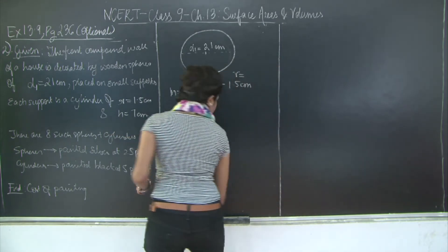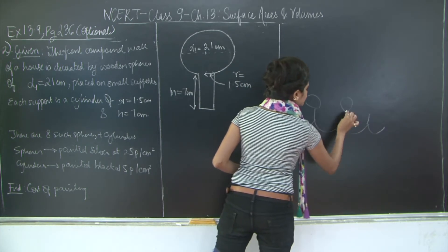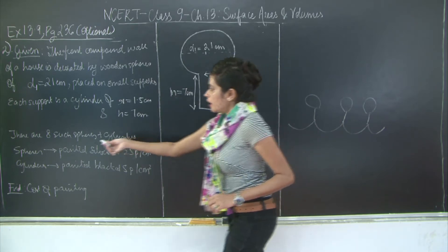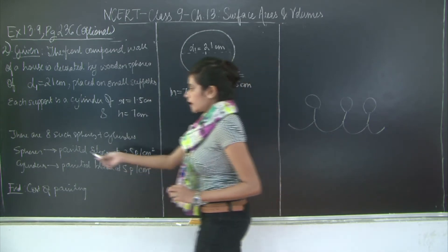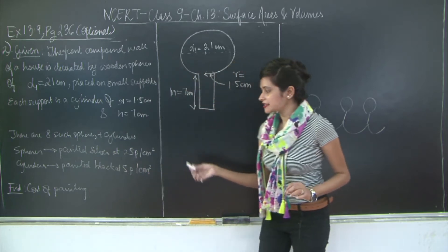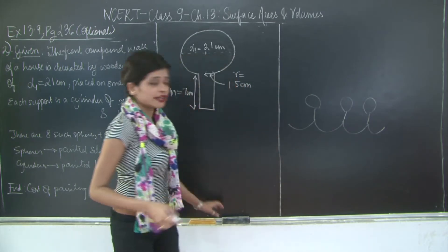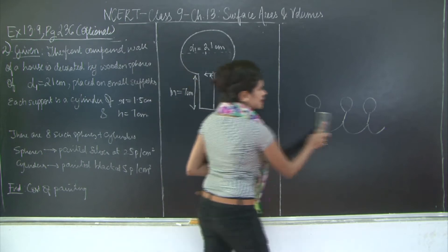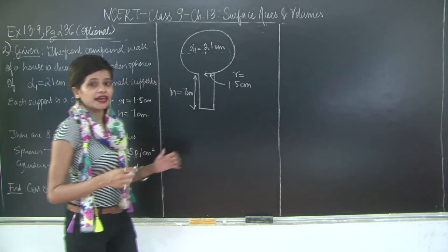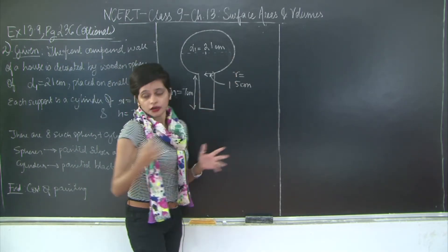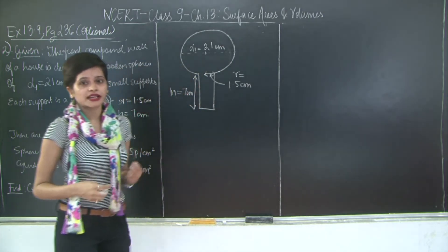There are 8 of these units forming a fence. The spheres are painted silver at the rate of 25 paise per centimeter square, whereas the cylinders are painted black at the rate of 5 paise per centimeter square. We need to find the total cost of painting by finding the surface areas, multiplying by respective rates, and adding the two costs.